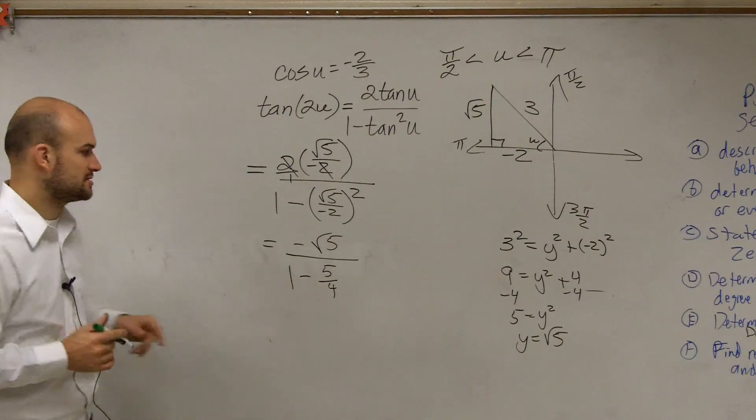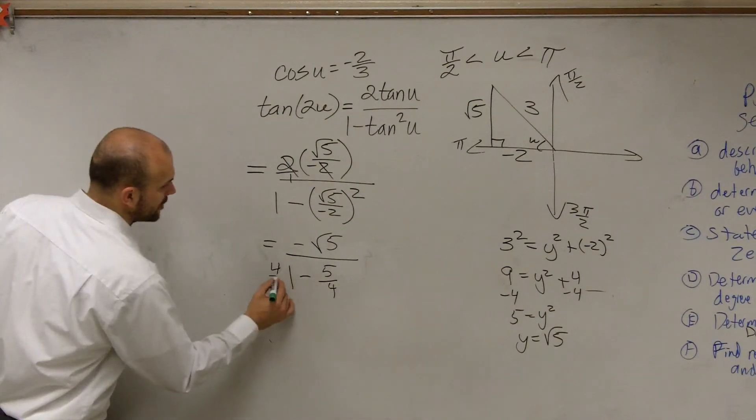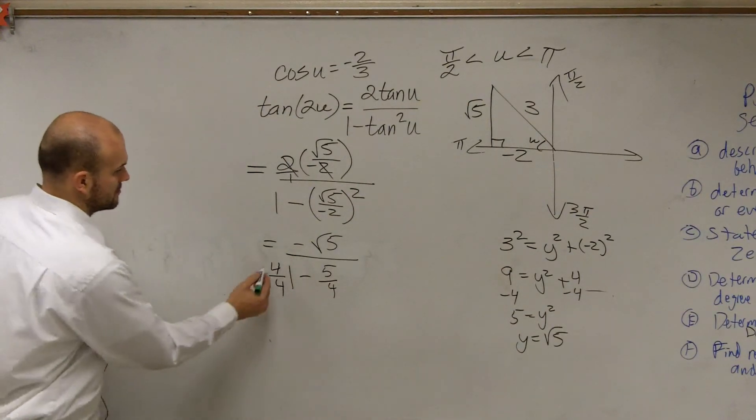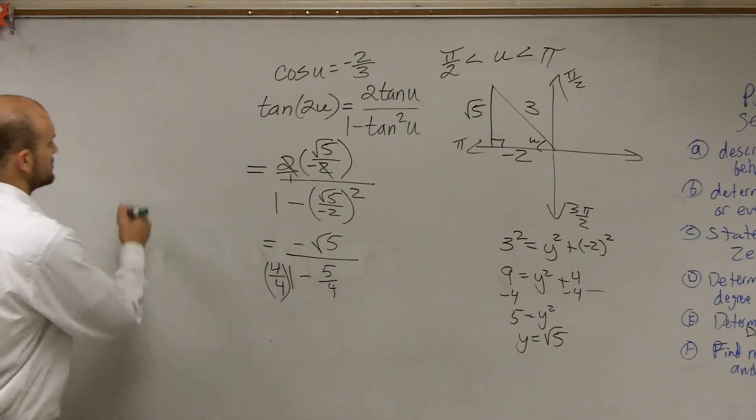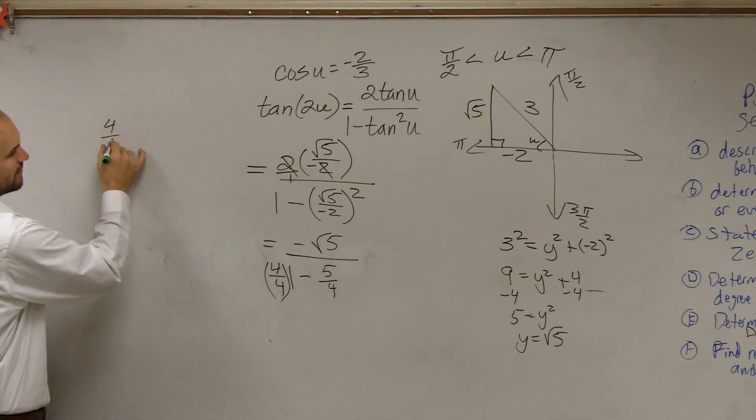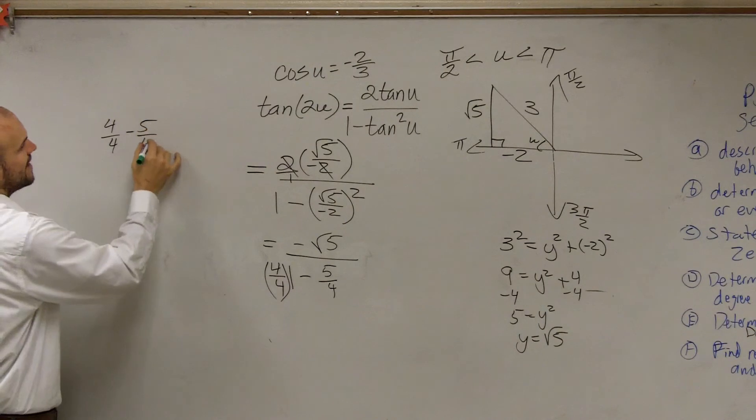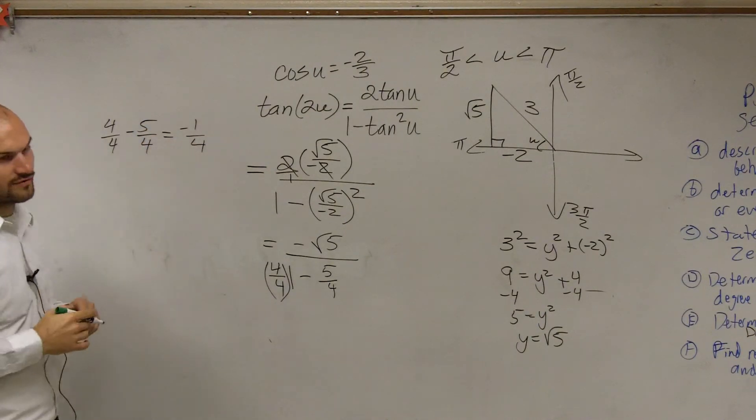Now you've got to subtract fractions. So I've got to multiply by 4/4. So I have 4/4 - 5/4, which equals -1/4.